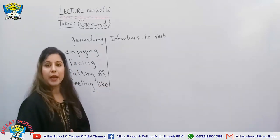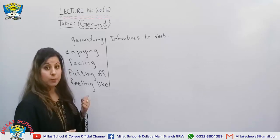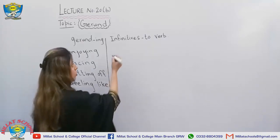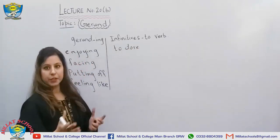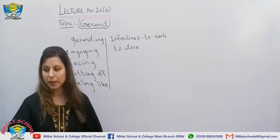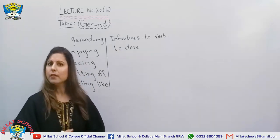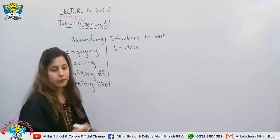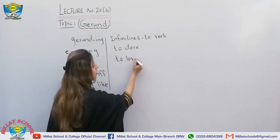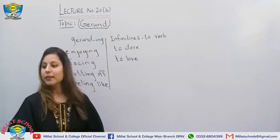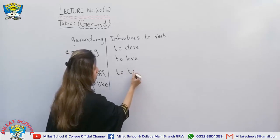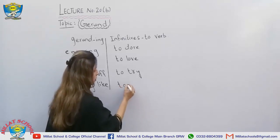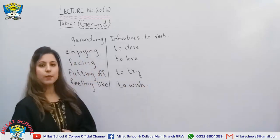Keep in mind that gerunds represent ongoing situations. For infinitives: 'dare' becomes 'to dare' — 'I want to dare you.' 'Love' becomes 'to love' — 'I love to eat burgers.' 'Try' becomes 'to try' — 'He advised me to try all the time.' 'Wish' becomes 'to wish.' There must be a difference between 'to' and the verb. Now make as many sentences as you can.